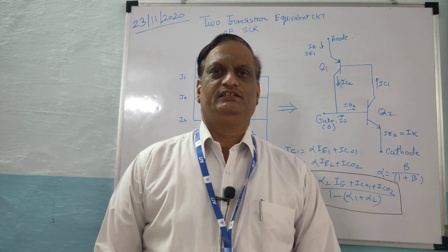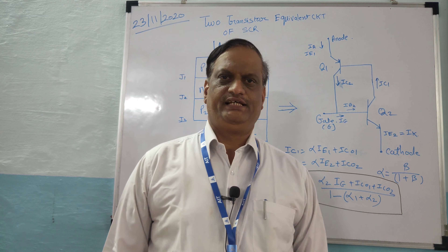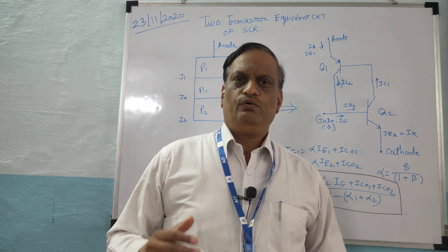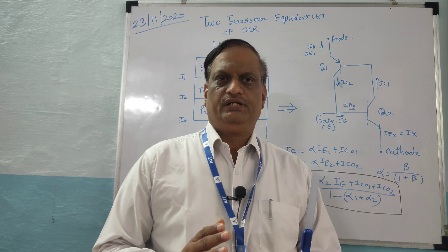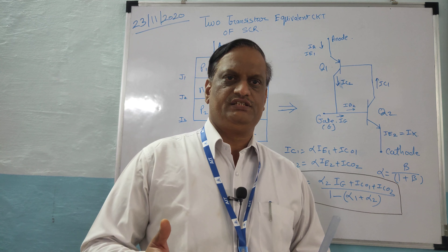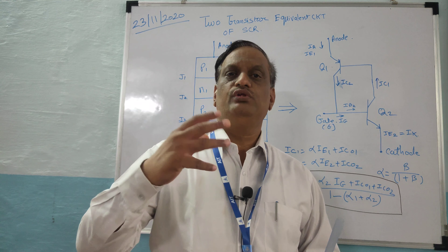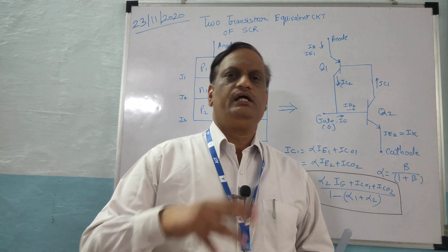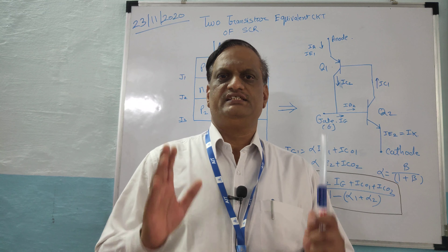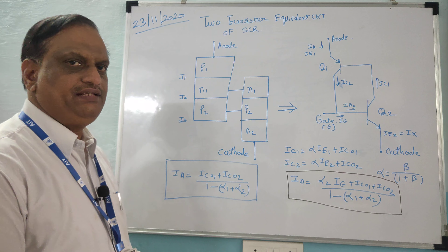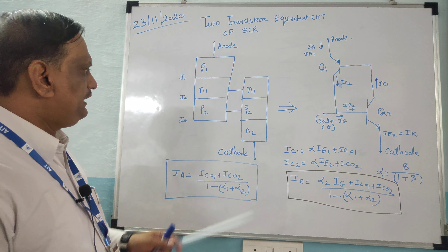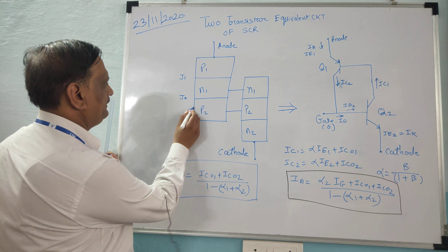Today we will discuss the two transistor analogy model of the SCR, also called the equivalent circuit for the silicon controlled rectifier. We must understand how the SCR operates internally — how current circulation takes place during the operation of the SCR. It is better to understand the SCR with the help of the two transistor analogy model. The SCR is a three-junction, four-layer, three-terminal semiconductor device.